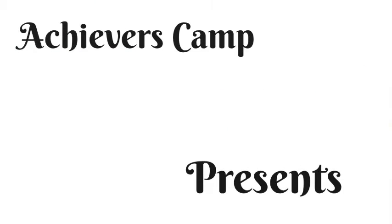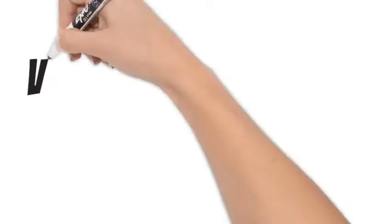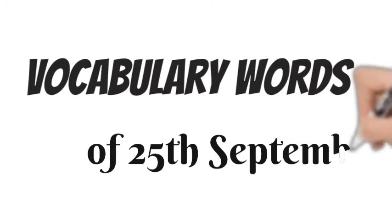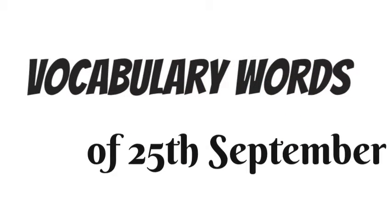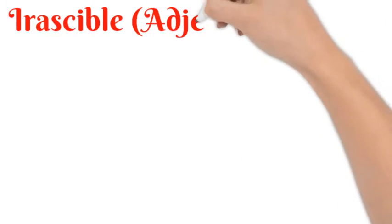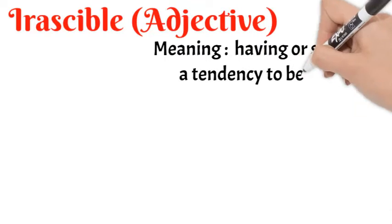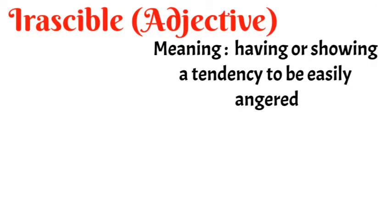Hello everyone, Achievous Cam presents vocabulary words of 25th September. So let's understand the first word for today: Irascible. Irascible is an adjective which means having or showing a tendency to be easily angered.